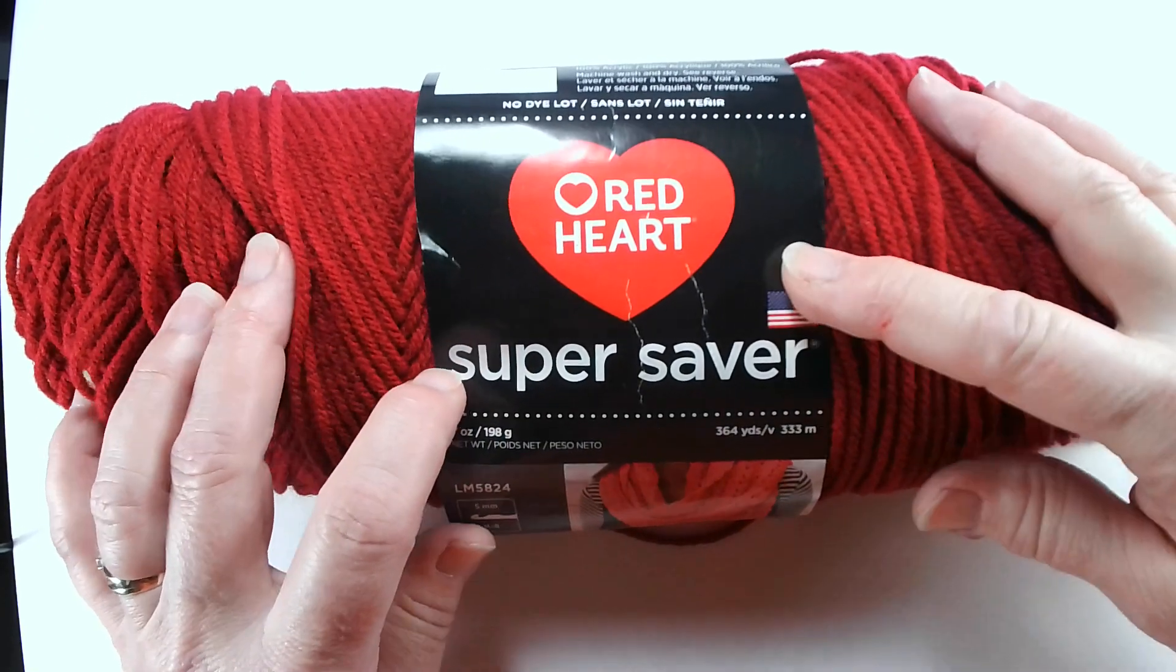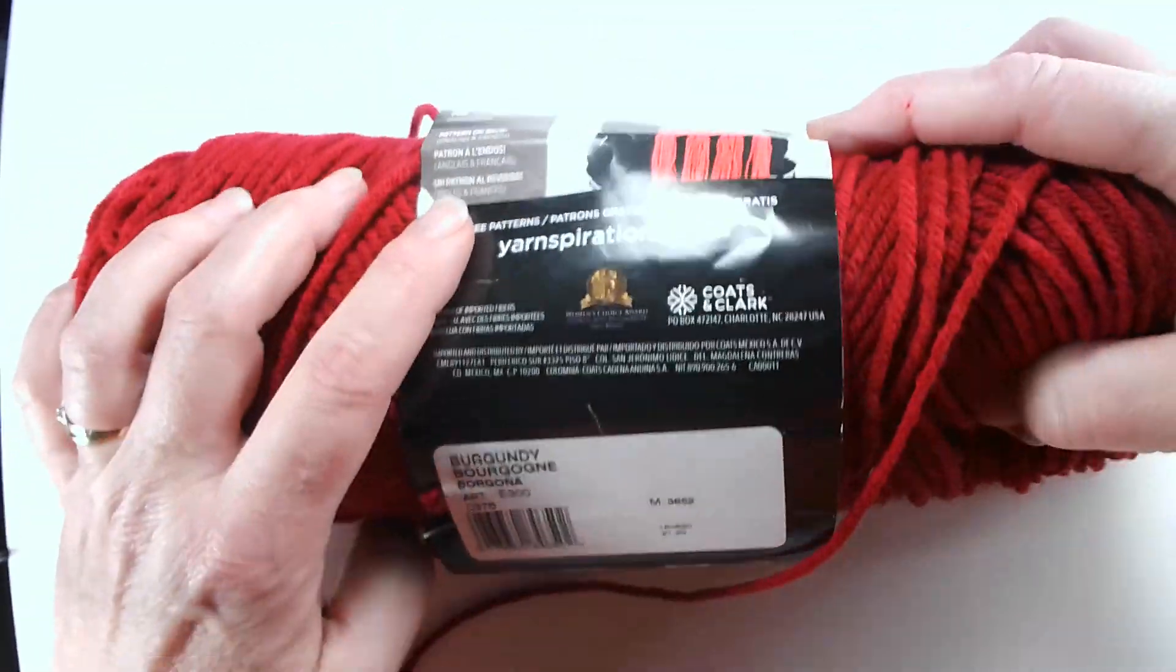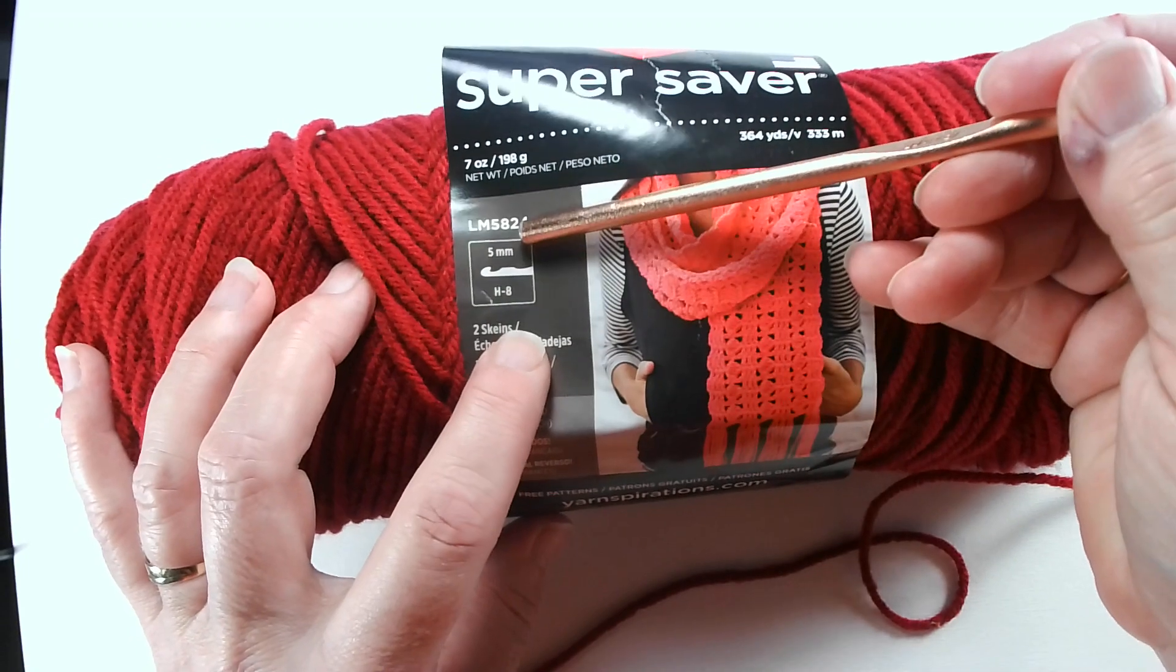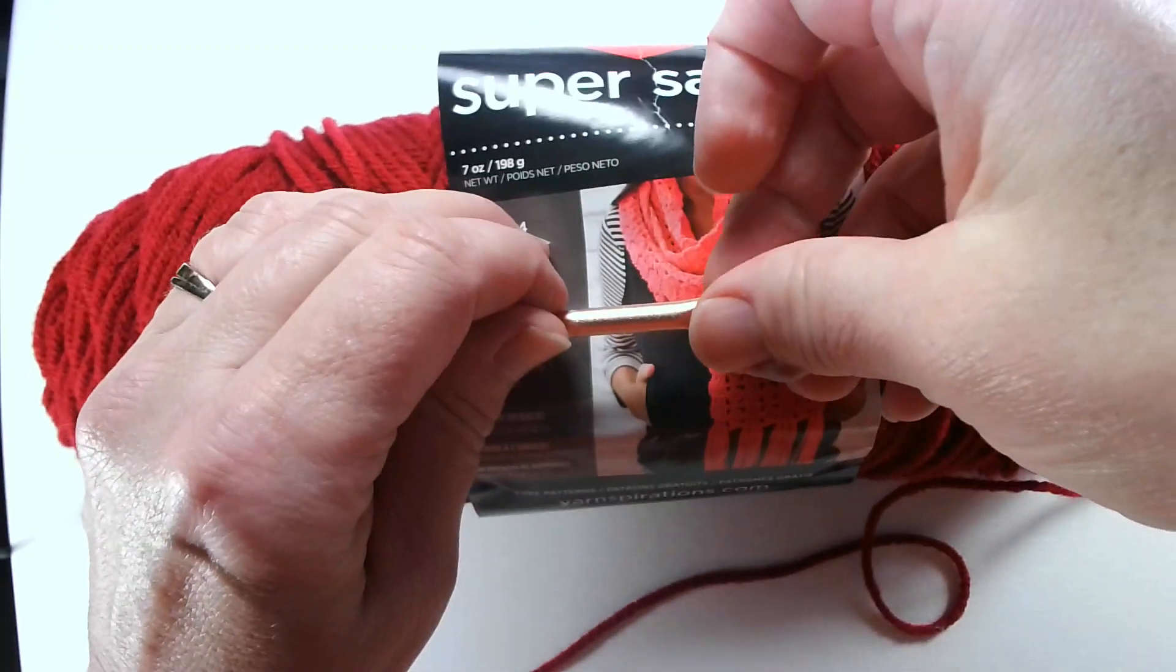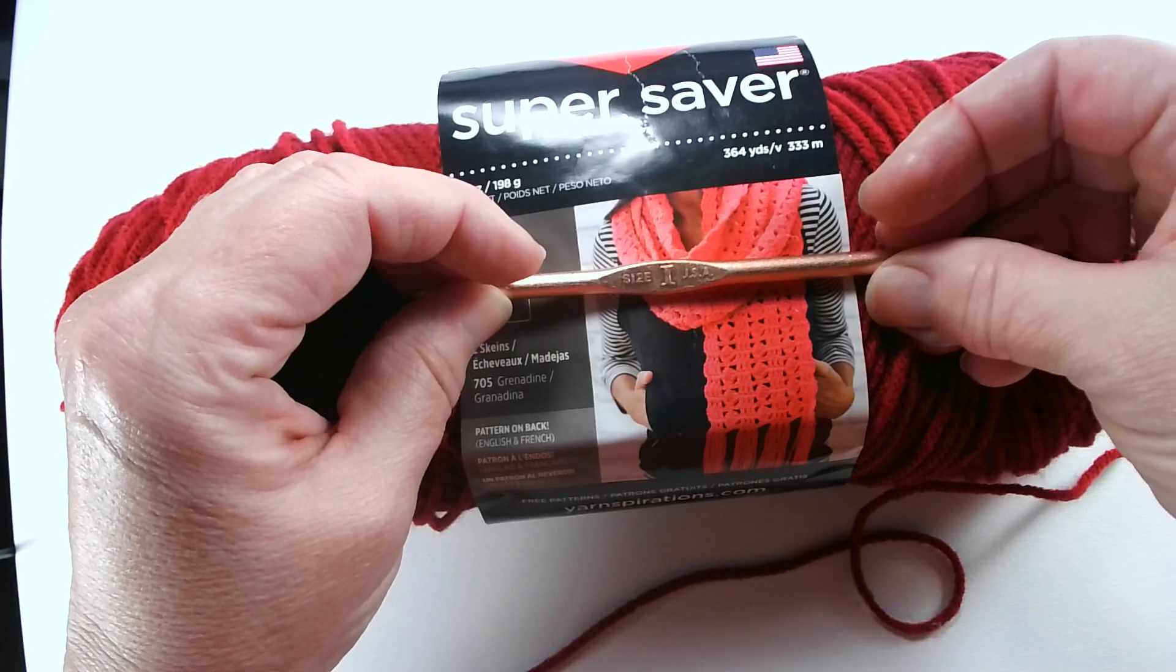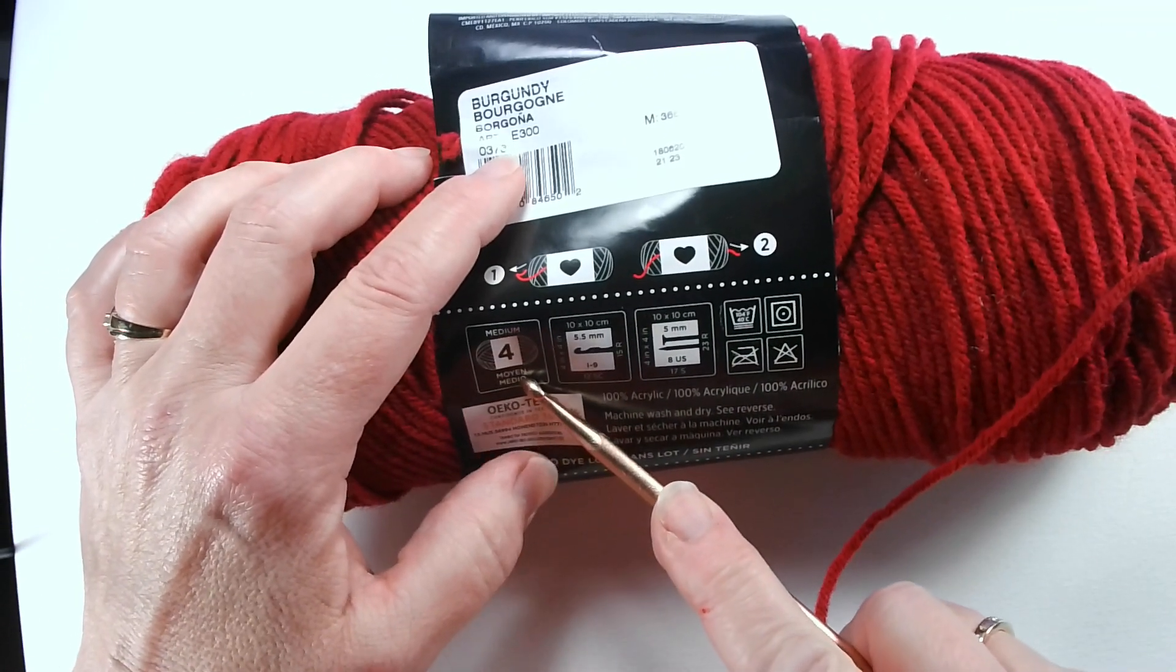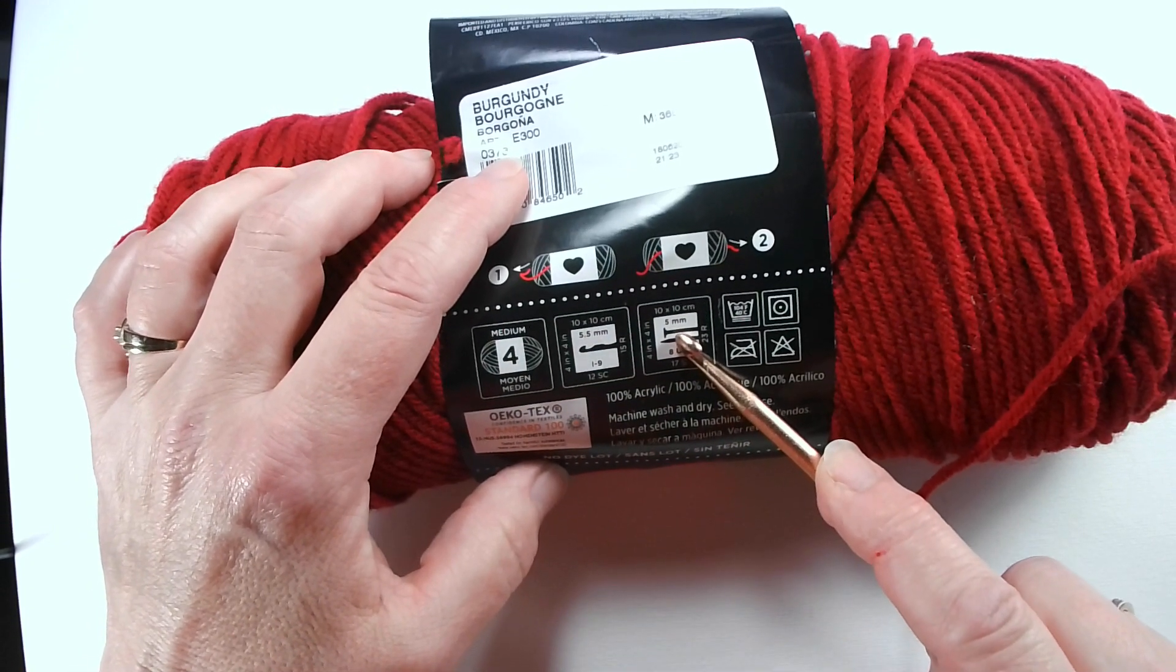I'm working with Red Heart Super Saver yarn today in this pound bag, burgundy. It's a four ply yarn. It says a five millimeter crochet hook is what you should use for H8. Today we are using a size I crochet hook, so that's a 5.5 millimeter, just a little bit larger. The yarn will usually tell you the size of it. This is a medium four yarn and it tells you the size of the hook and if you're doing knitting it tells you the size of the knitting needles.